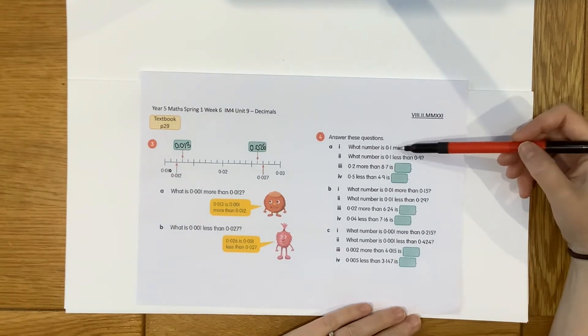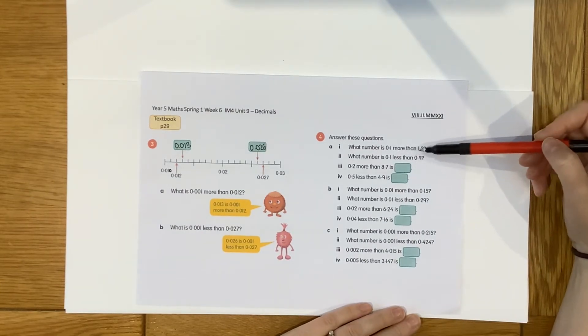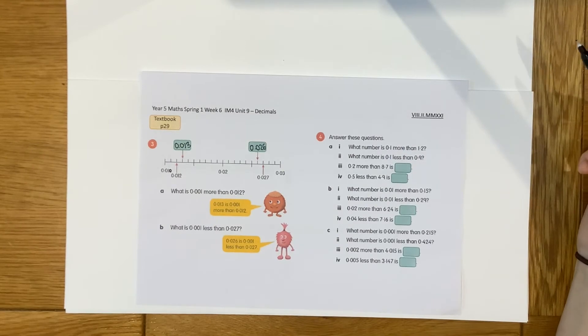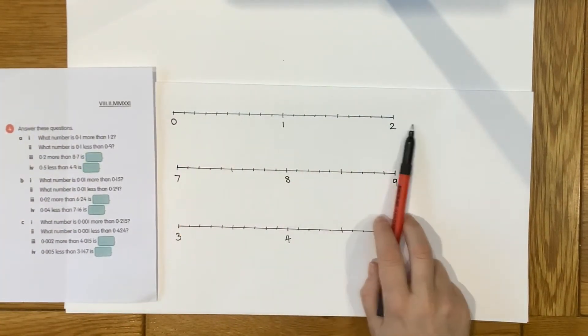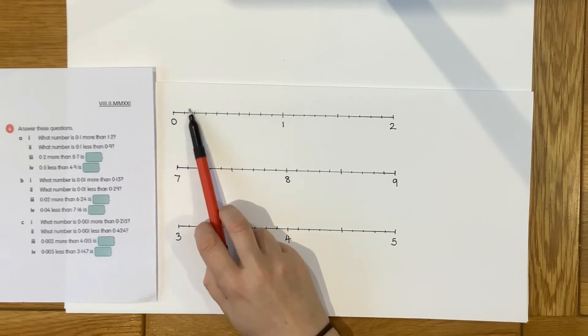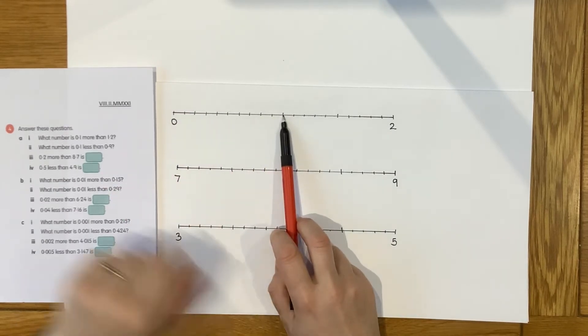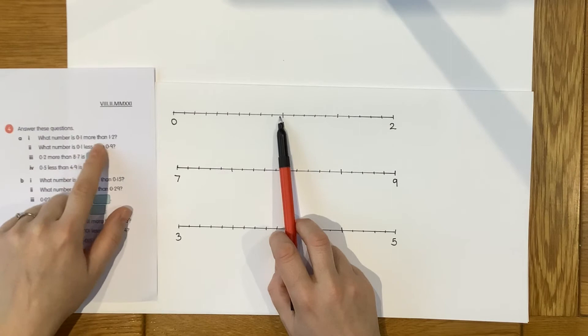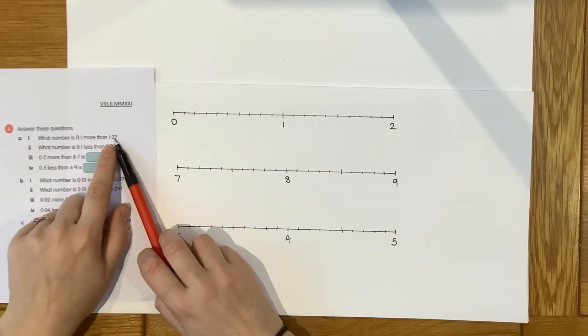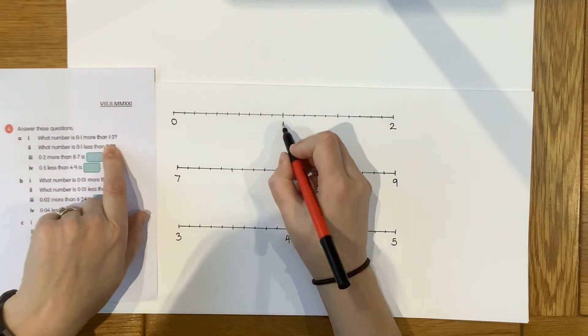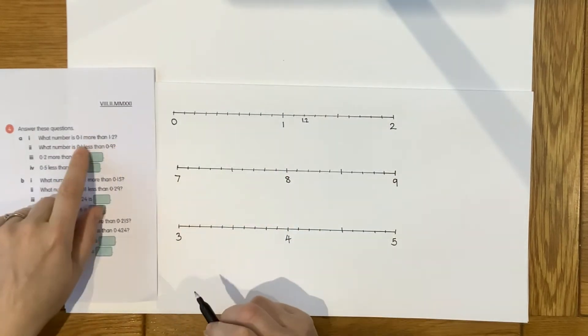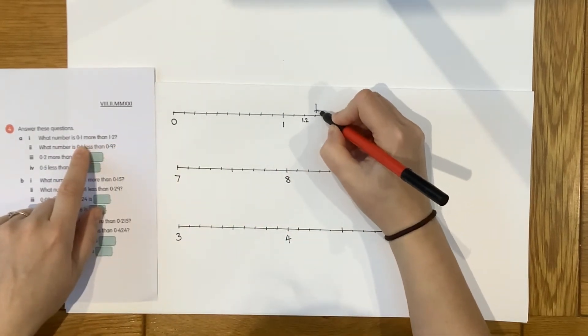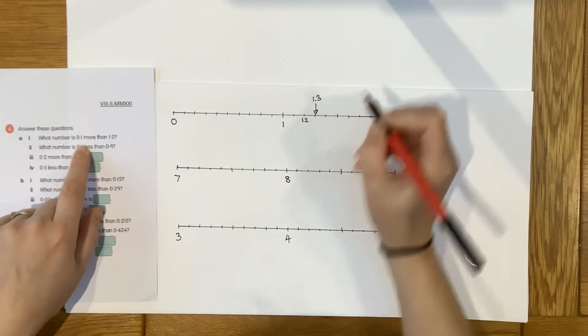Okay, let's have a look then, 4A. What number is 0.1 more than 1.2? So I can look at this on a number line, and I can say, well, here's my number line. These are tenths, because ten make up a whole one. And I want 0.1 more than 1.2. So first of all, I need to find 1.2. I've got 1, 1.1, 1.2. And I want to go 1 tenths more, so the answer's going to be 1.3.